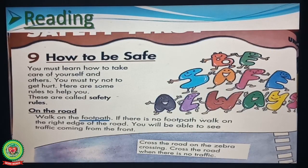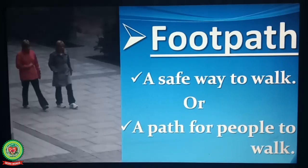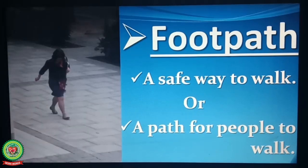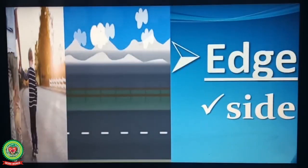We should always follow safety rules. Safety rules are made for our safety. Now we will discuss safety rules on the road. Walk on the footpath. Underline the word 'footpath' and write down its meaning: a safe way to walk, or a path for people to walk. If there is no footpath, walk on the right edge of the road. Underline the word 'edge' and write down its meaning: side.